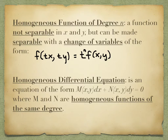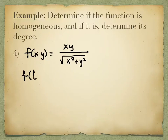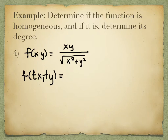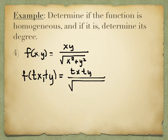We're going to use that first definition and show you how to do a problem where we identify something as being homogeneous and finding its degree. Then we're going to do an example about the tx, ty substitution. That just means replacing x with tx and y with ty. So this is tx times ty on top over the square root of (tx)² plus (ty)².